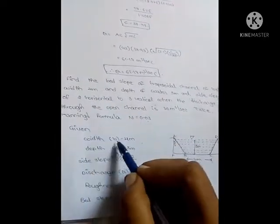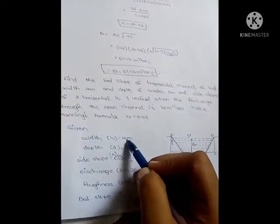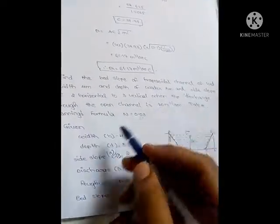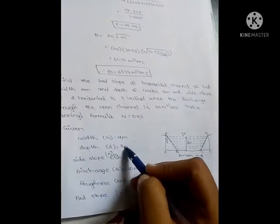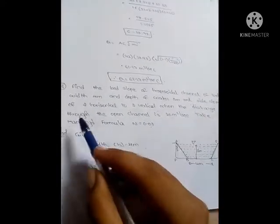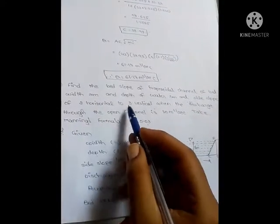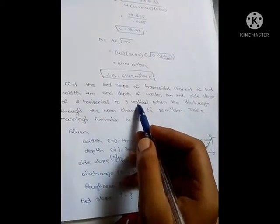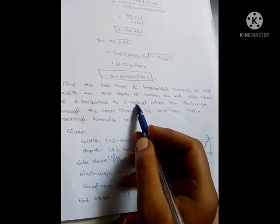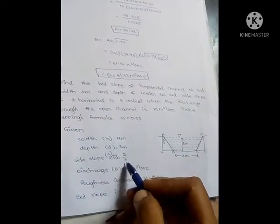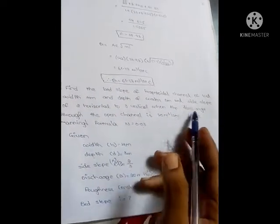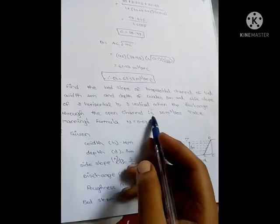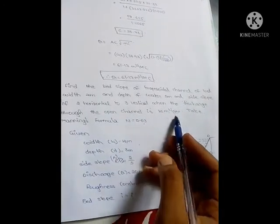Given data: bed width b equals 4 meters, depth d equals 3 meters, side slope n equals 2 by 3 (2 horizontal to 3 vertical), and discharge Q equals 20 meter cube per second. Roughness constant n equals 0.03.